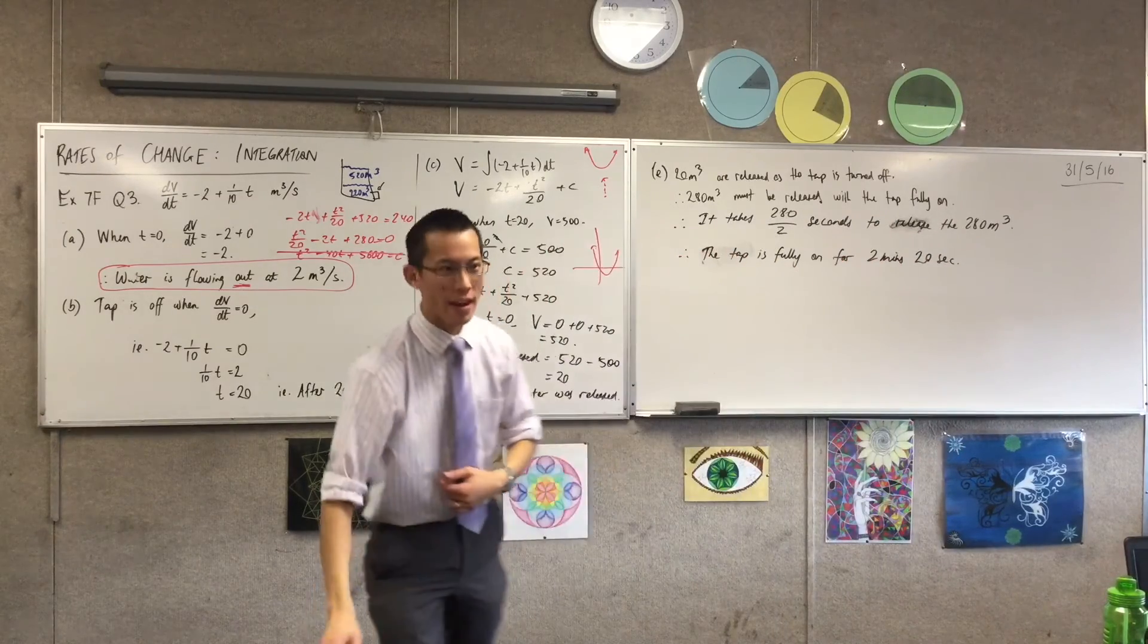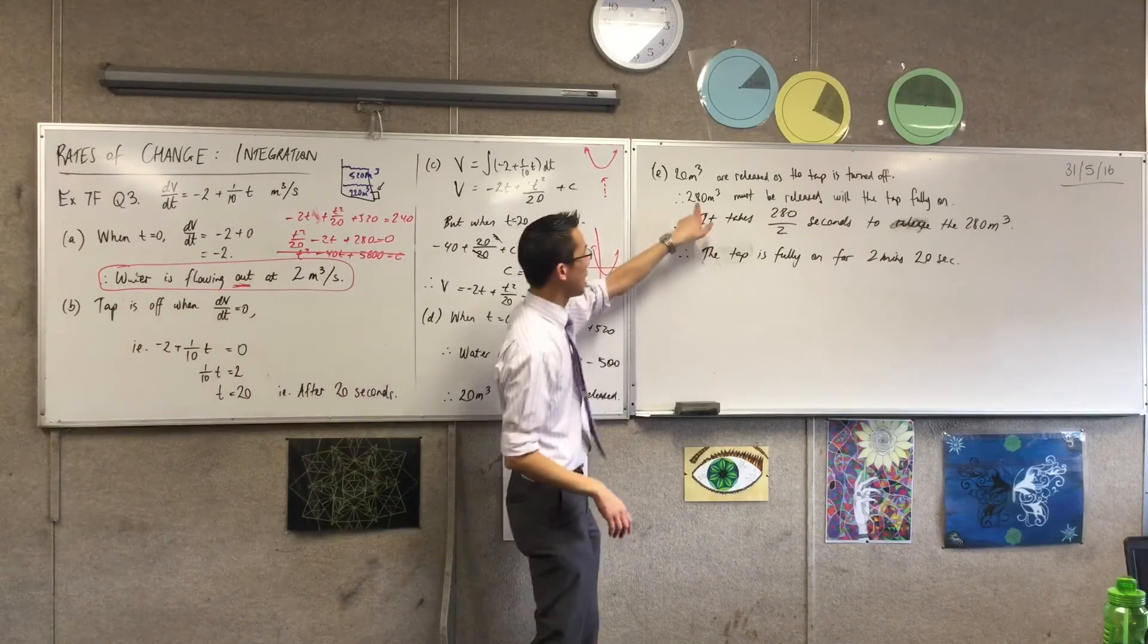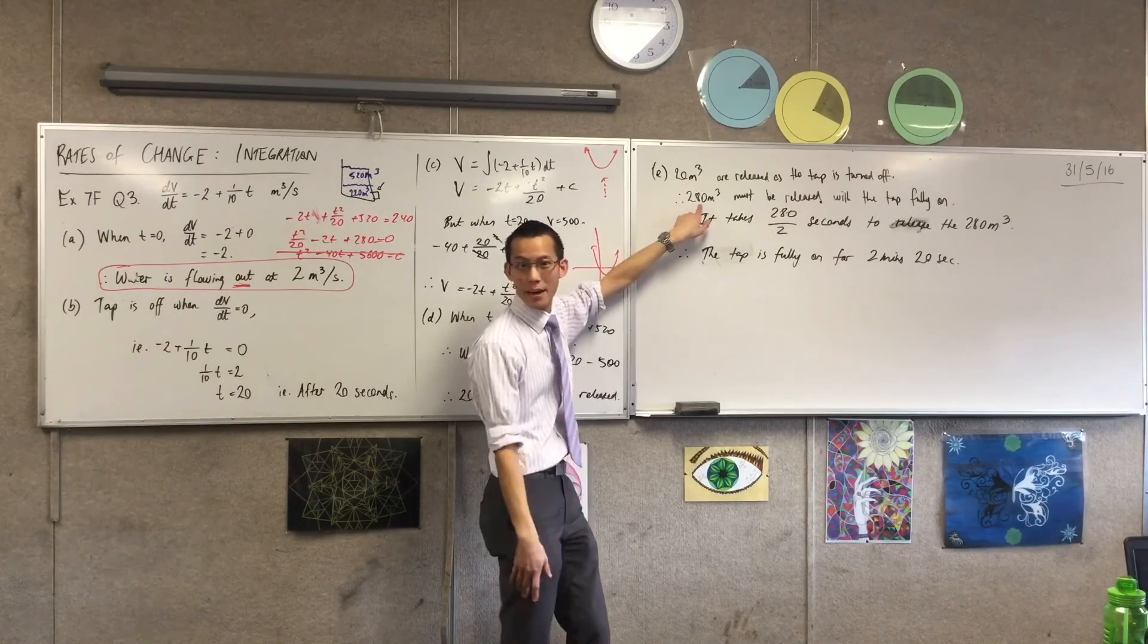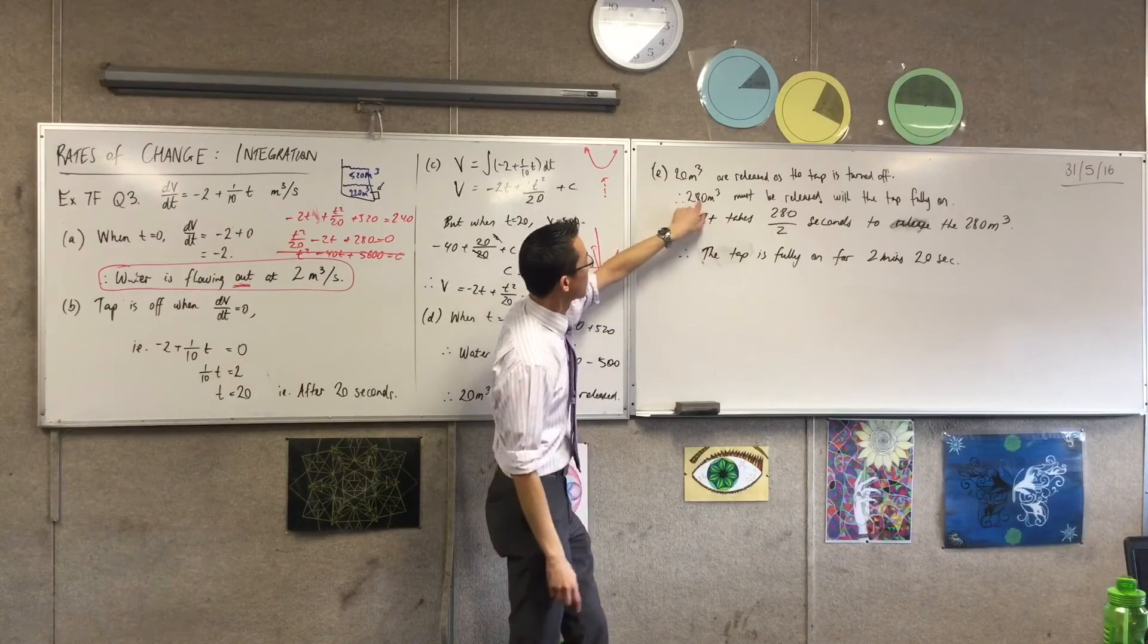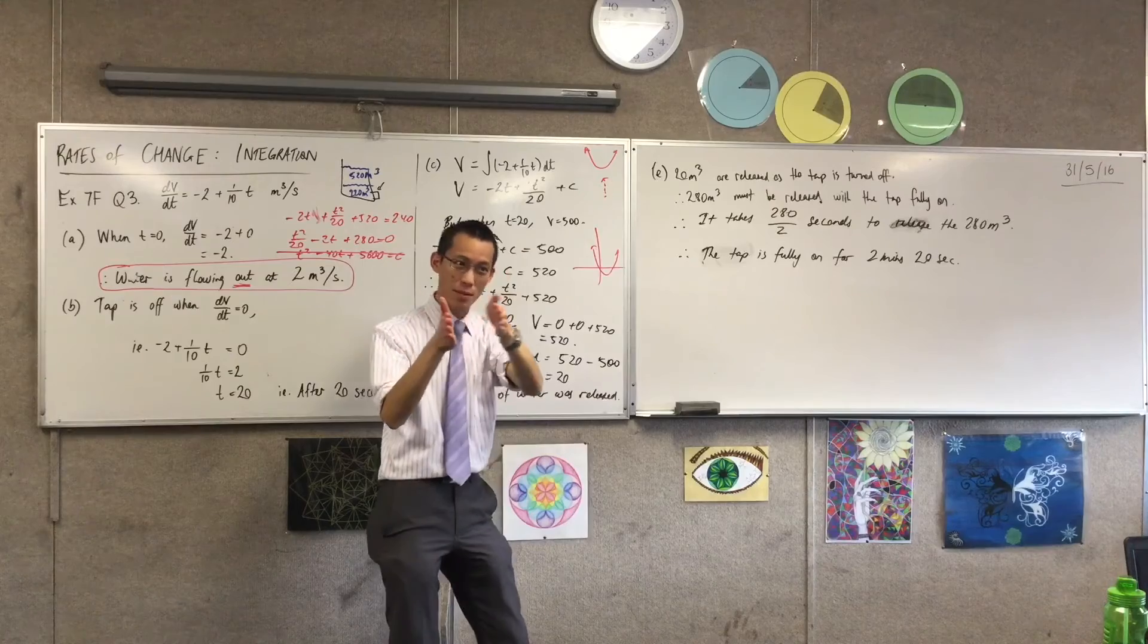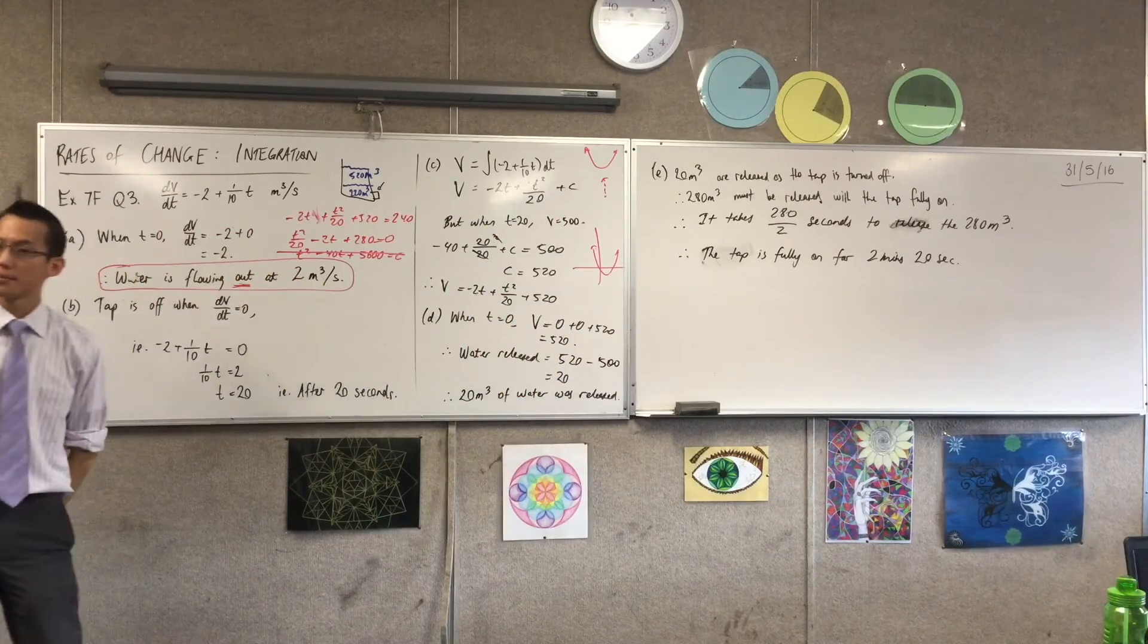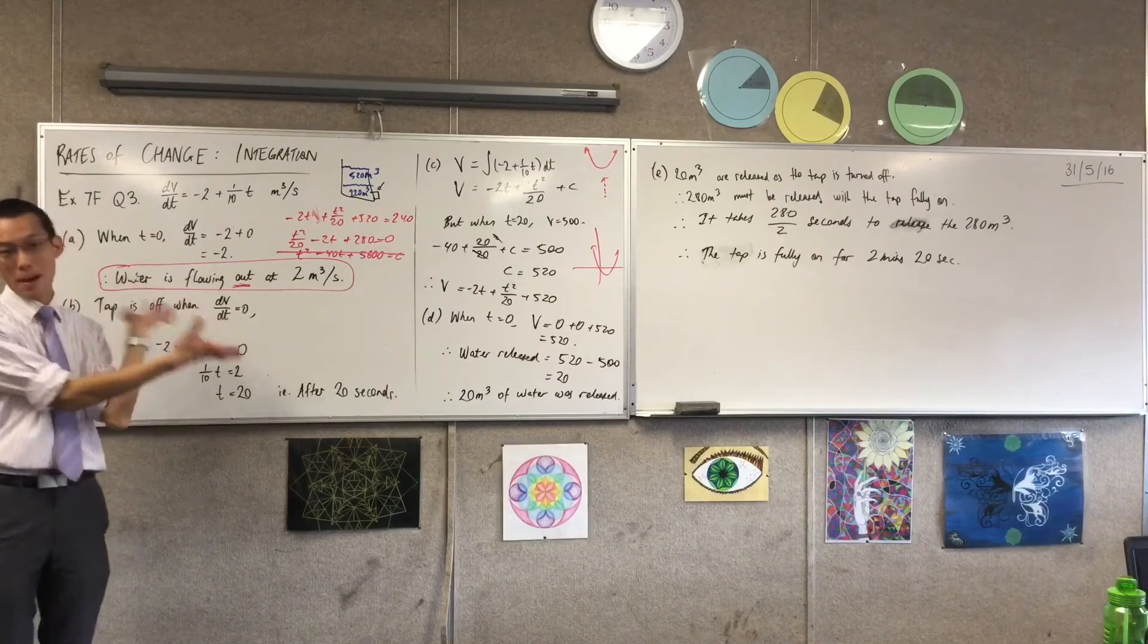So now you have the scenario in your head, right? You turn it on, off it goes, two minutes and 20 seconds pass, and this amount of water gets released in that time, and then you start to turn the tap. And you turn it slowly and slowly, and eventually that 280 just comes up to 300, and then at that point it's fully off, okay?